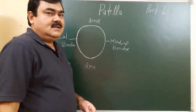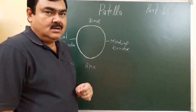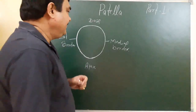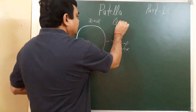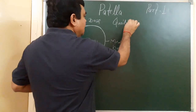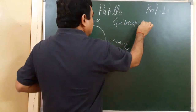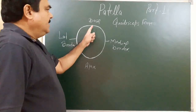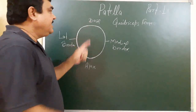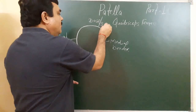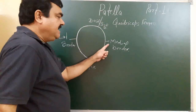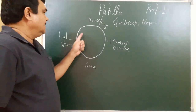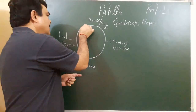The patella is the largest sesamoid bone, present in the tendon of the quadriceps femoris muscle. It has a base or superior border, a medial border, a lateral border, and an apex. Its shape is like a small plate.